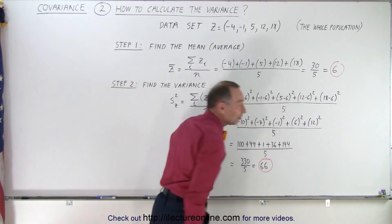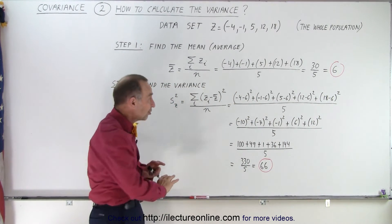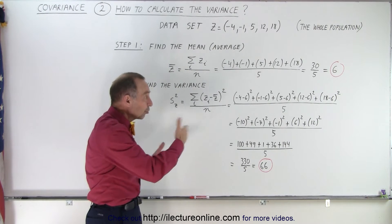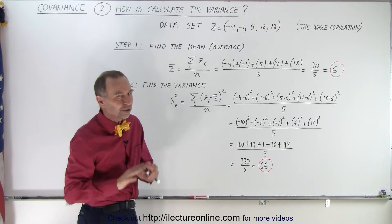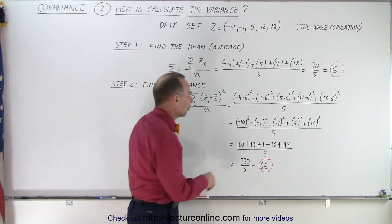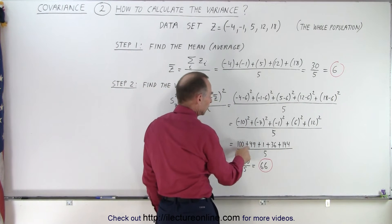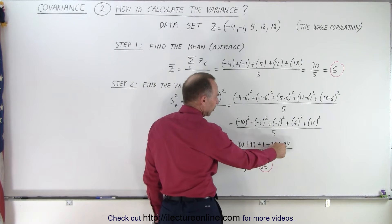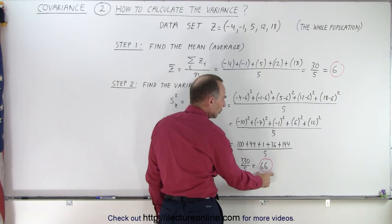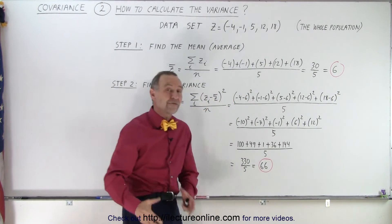But we square those differences, so notice since we square them, it doesn't matter if we end up with a negative or positive number—the result of each of those squared will always be positive. So the variance is always going to be a positive number. When we do that, we end up with 100 plus 49 plus 1 plus 36 plus 144, divided by 5, and all that adds up to 66. So that's the variance.